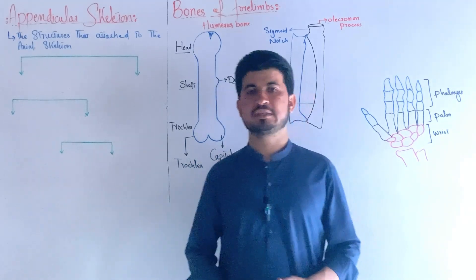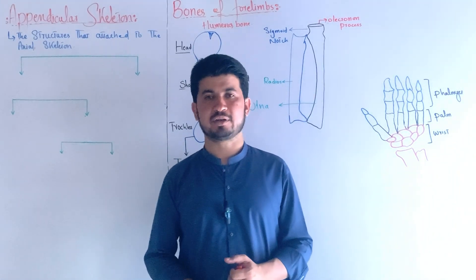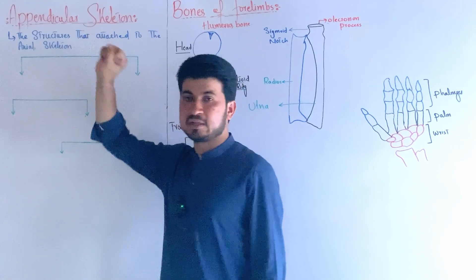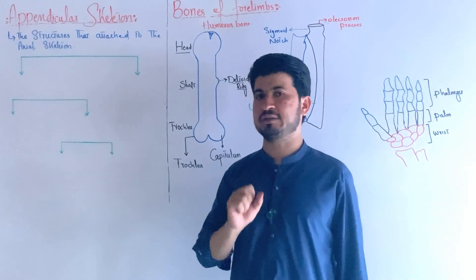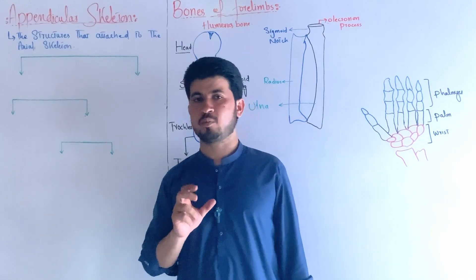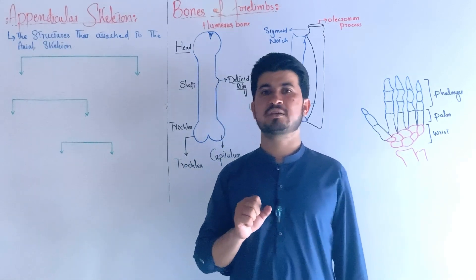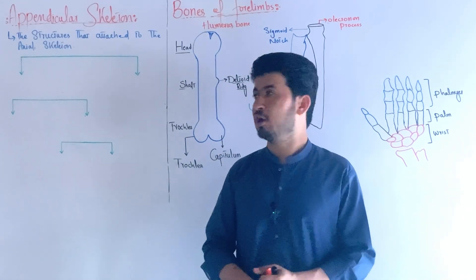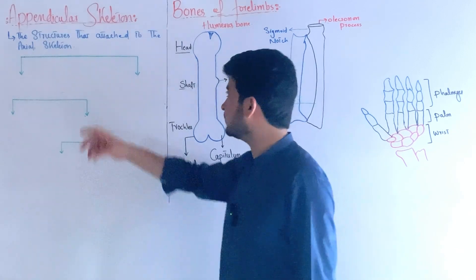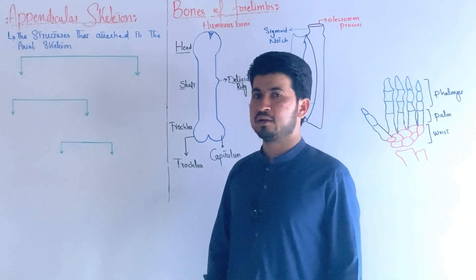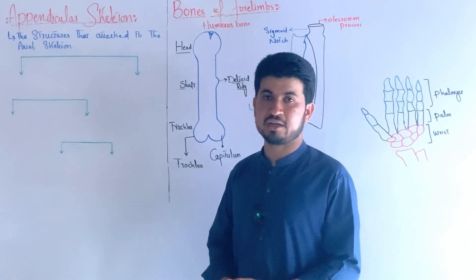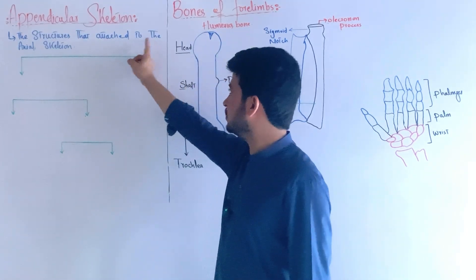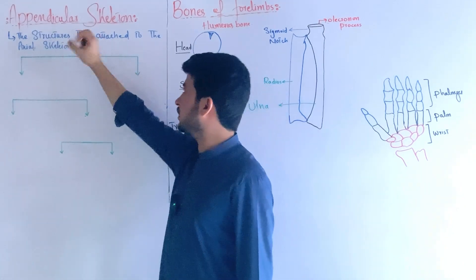Assalamu alaykum dears. The appendicular skeleton, today we will discuss. Starting with the appendicular skeleton - the appendicular levels are in the appendages. Appendages are outgrowth structures. The human outgrowth structures are the four limbs - the forelimbs and the hindlimbs. The appendicular skeleton includes structures attached to the axial skeleton.